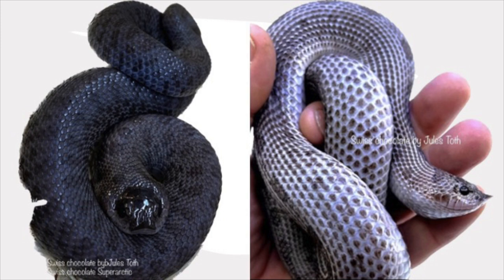So on the left you have a Swiss Chocolate Super Arctic. And if you thought the headstamp was already glazed, well with the Super Arctic it just becomes that much more glazed. The one on the right is a Super Arctic Swiss Chocolate Conda — the only thing that changes is the pattern. The one on the left is a normal pattern, the one on the right is a Conda. Each example varies significantly because you have a lot of genes that intervene in the phenotype of the animal. You're never going to have one animal that looks the same because there are just a lot of genes that go into an animal.